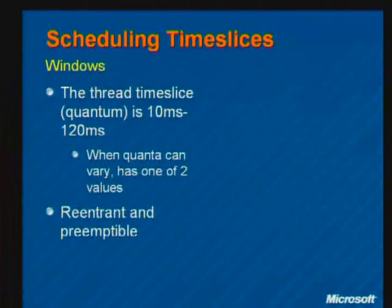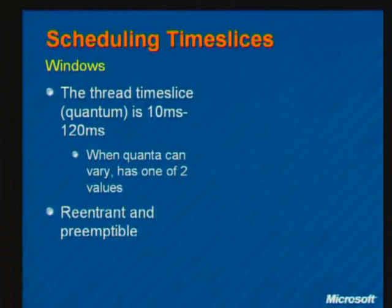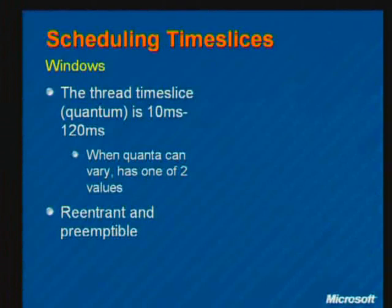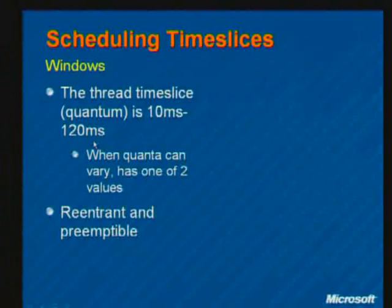When the scheduler decides to schedule a thread on a CPU, it gives that thread a turn called a quantum or time slice. When the quantum expires, if the thread hasn't voluntarily given up the CPU, the scheduler checks whether another thread of the same or higher priority should run instead. If a higher-priority thread becomes runnable, it runs immediately. Otherwise the thread finishes its quantum.